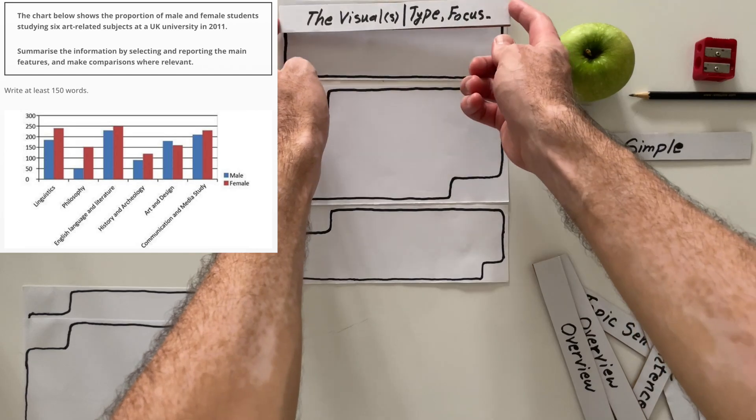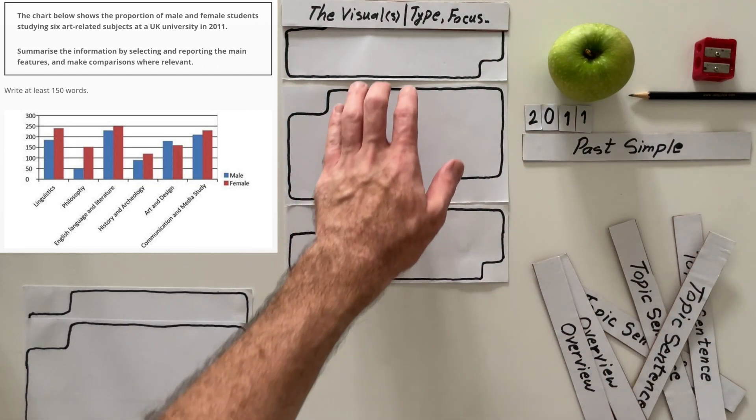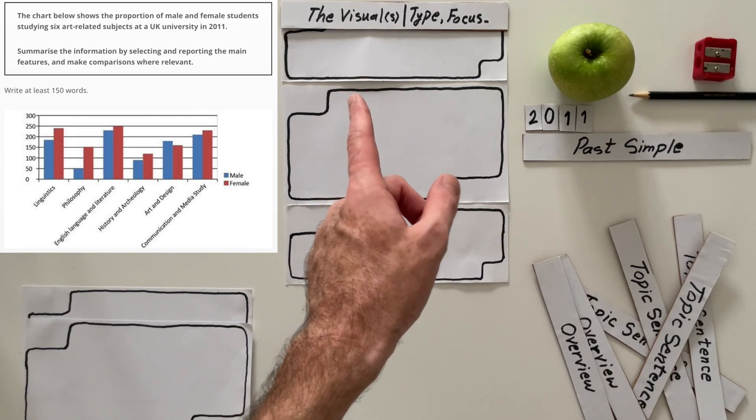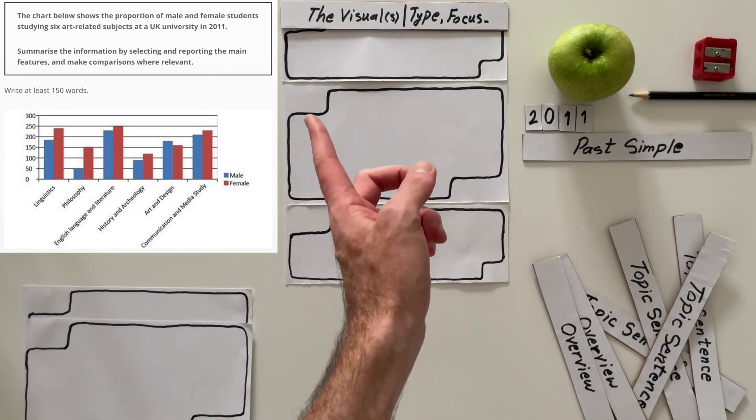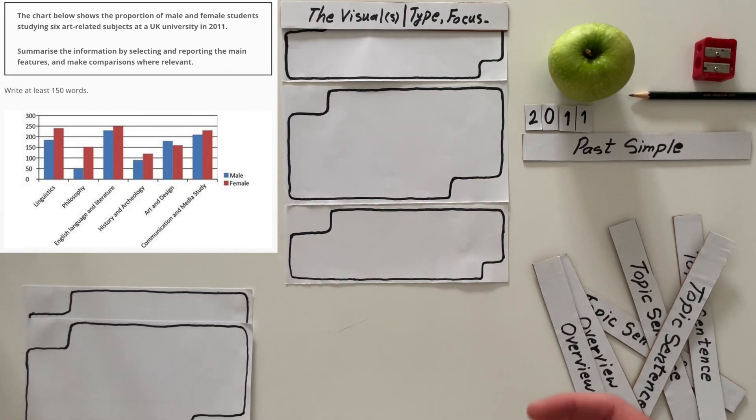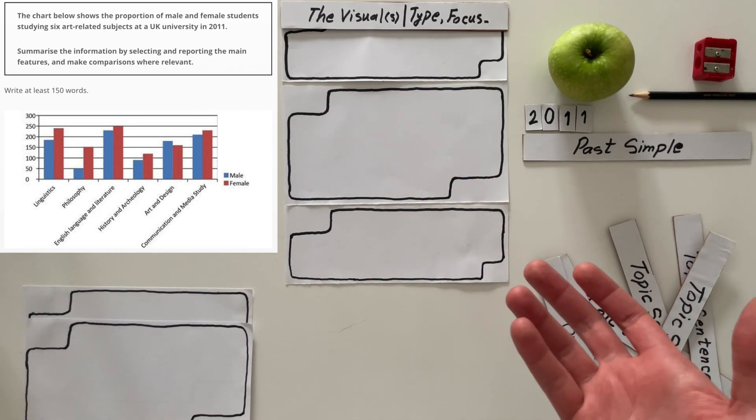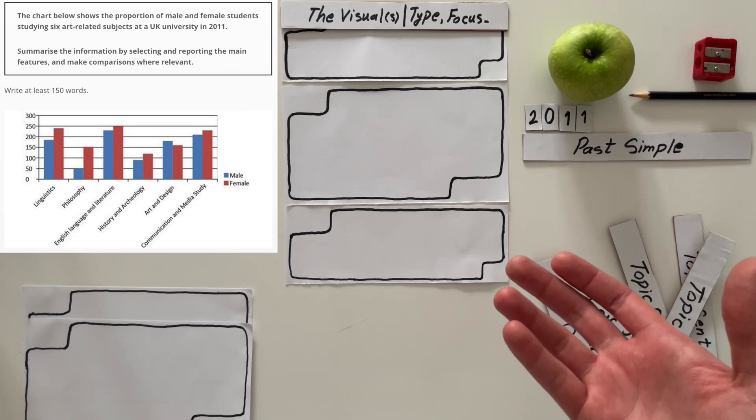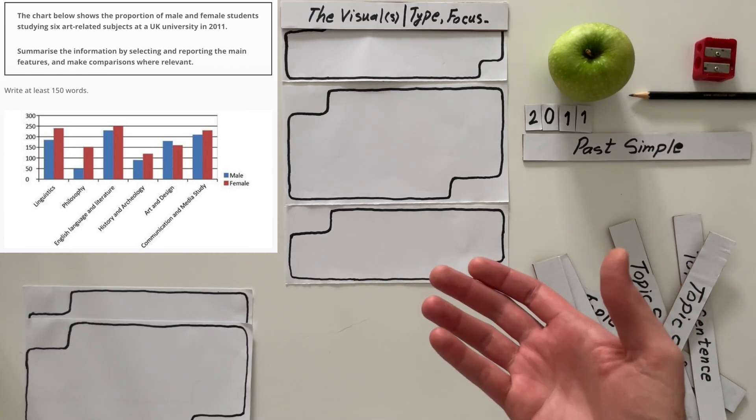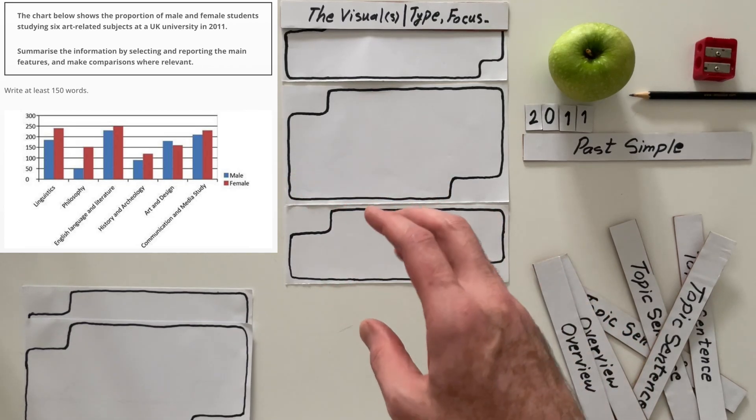Then we're going to start. The first important element, the first sentence, is to say what type of visual it is. We know it's a bar chart. Then we need to say what it shows. So when I look at it there is the proportion of male and female students. Let's take a look at it. I don't see percentages.